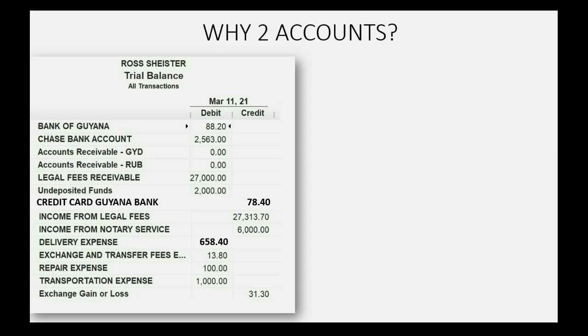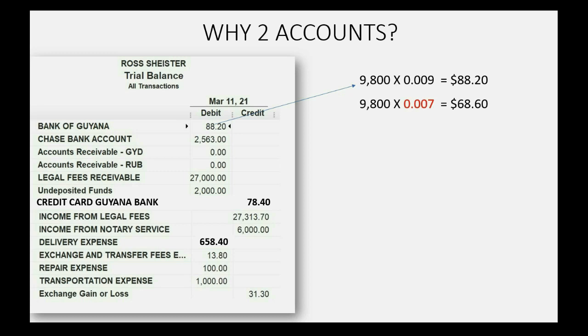Our Guyana bank account is holding 9,800 Guyana dollars that were previously worth 0.009 at the moment of our last adjustment or transaction, which is why the US dollar balance shows $88.20. But on the day we're paying the credit card, those same 9,800 Guyana dollars are only worth 0.007, so our bank account is only worth $68.60. That means we actually lost $19.60 from our Guyana bank account because the exchange rate was lower than when we acquired those Guyana dollars.